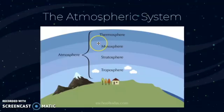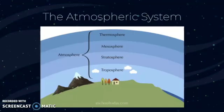When you move up to the mesosphere, the pressure becomes even less, and the temperature actually falls again like it did in the troposphere. This layer is where the Earth is protected from meteorites, and it also has very strong winds.